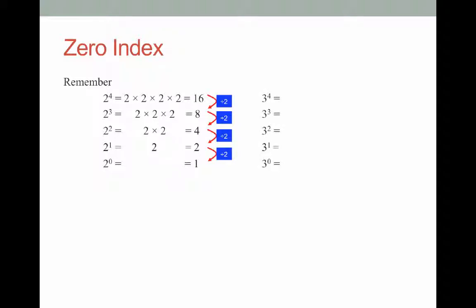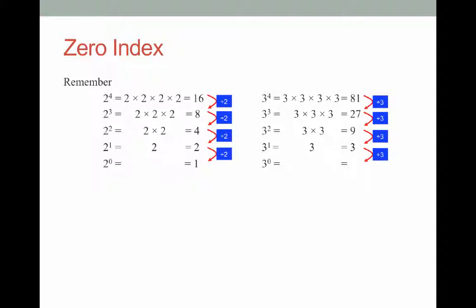Let's look at powers of 3 and see if it's the same pattern. 3 to the power of 4 is 81, 3 to the power of 3 is 27, 3 to the power of 2 is 9, and 3 to the power of 1 is 3. What's 3 to the power of 0? Starting at 81 and dividing by 3 each time gives 27, then 9, then 3 — so 3 divided by 3 also gives 1.